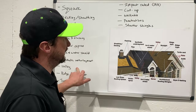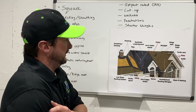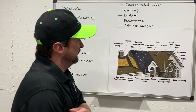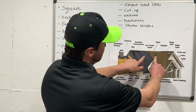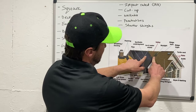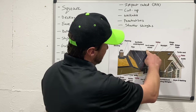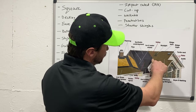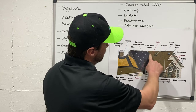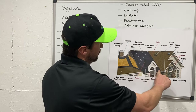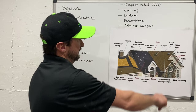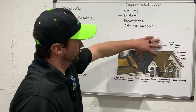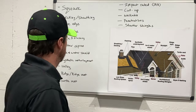The next term is your valley. That's where your two roof sections come together and create a little trough. That trough is considered your valley.